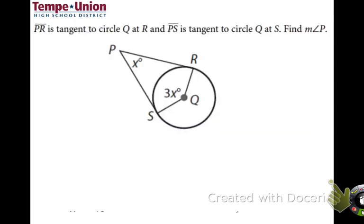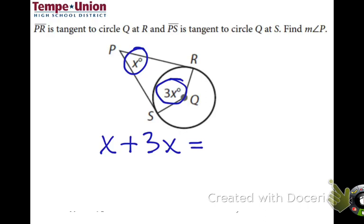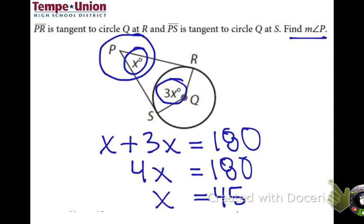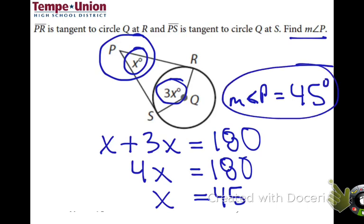A slightly more involved example: we have a circumscribed angle and a central angle. Adding them and setting equal to 180, combining like terms gives 4x equals 180, so x equals 45. We need to answer the question — what is the measure of angle P? The measure of angle P is 45 degrees.